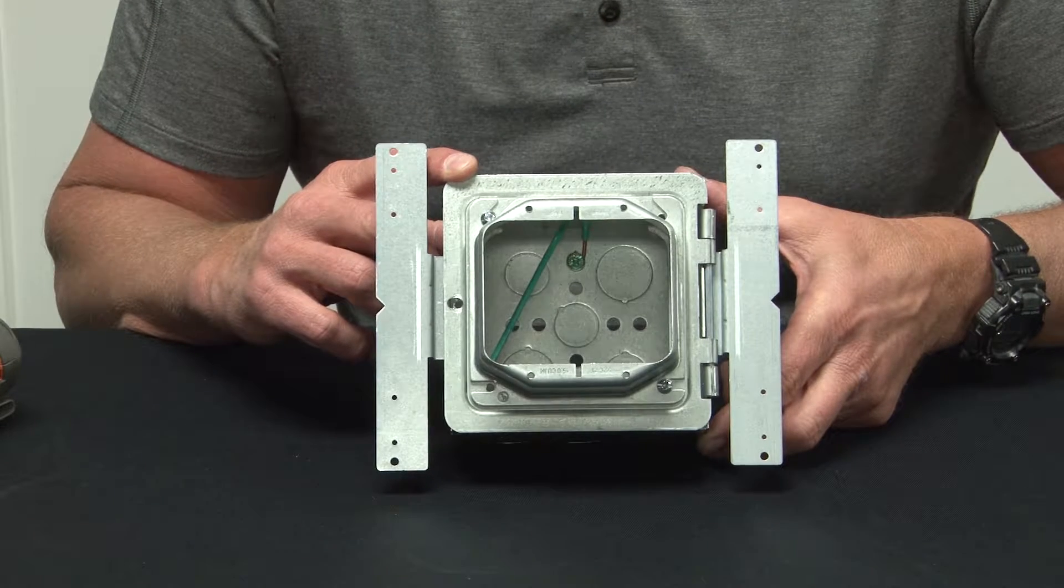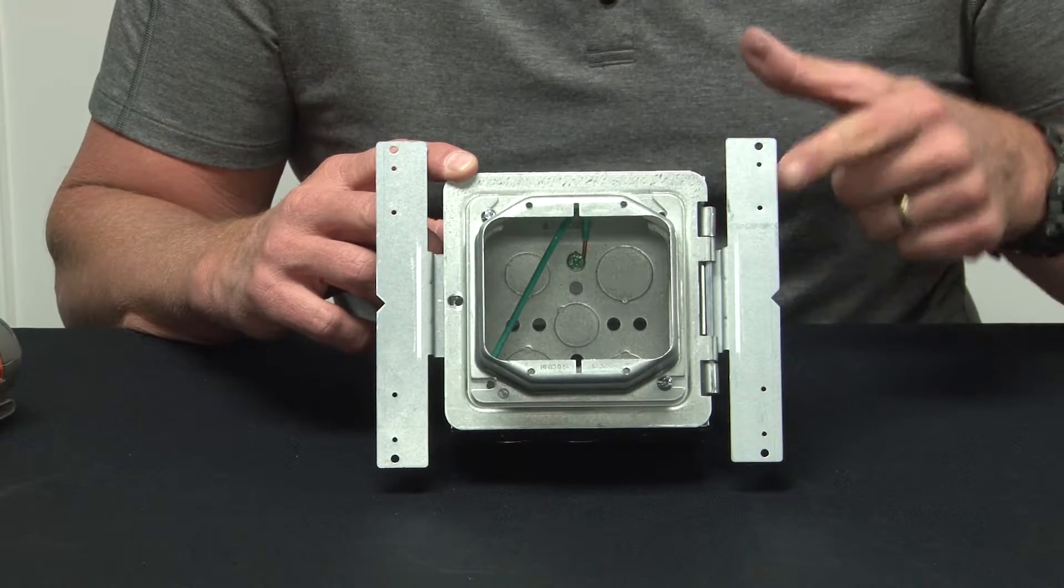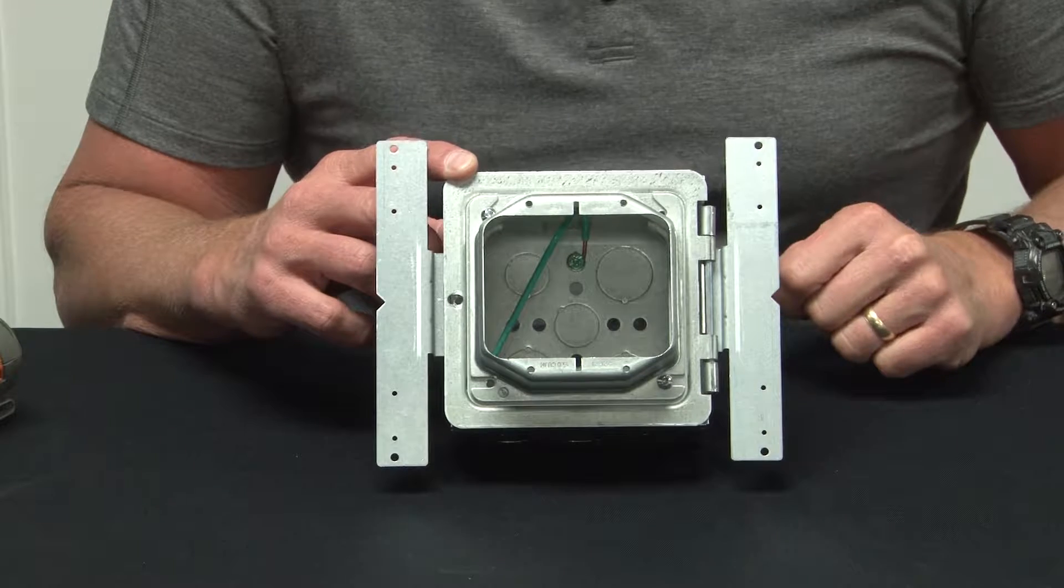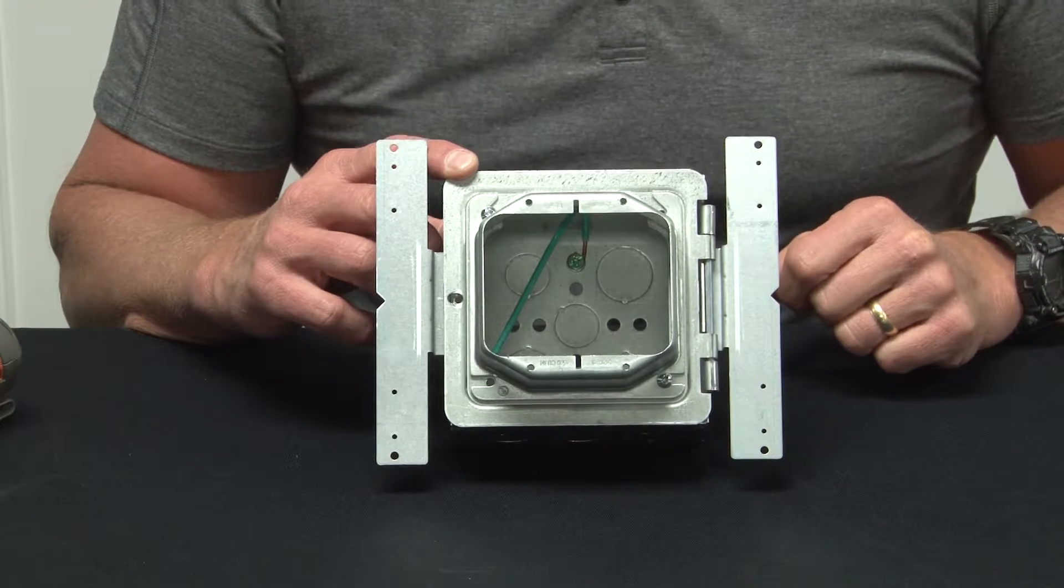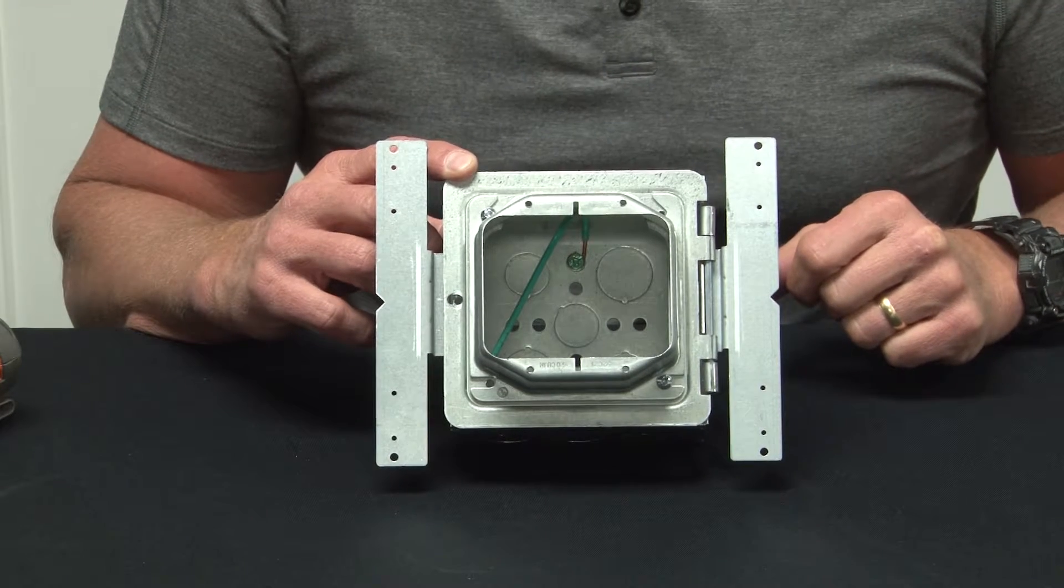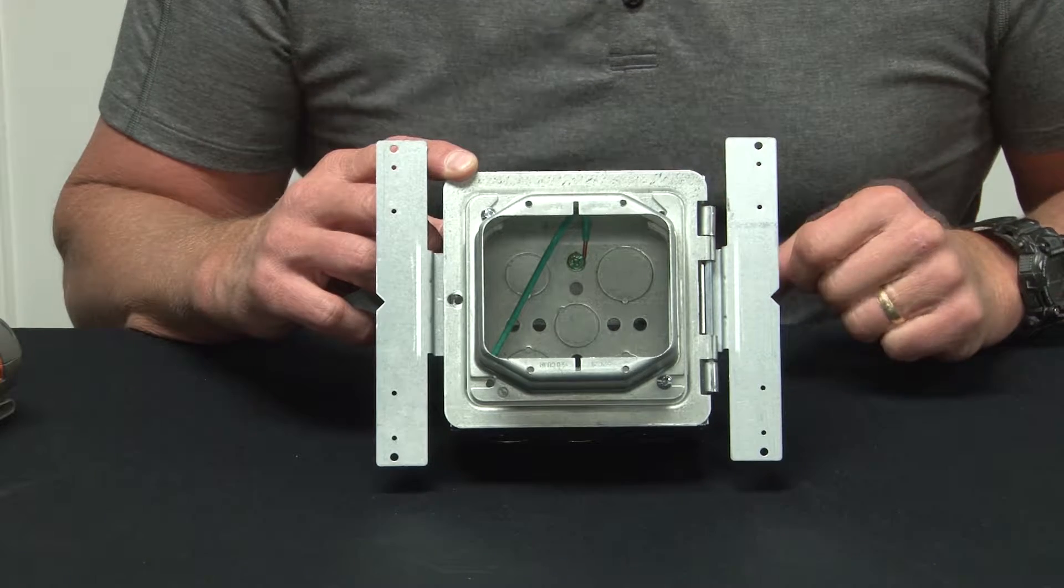Garvin Industries new hinged prefab box with angle bracket and two gang device ring allows the installer to mount electrical boxes, device rings and devices in seconds.